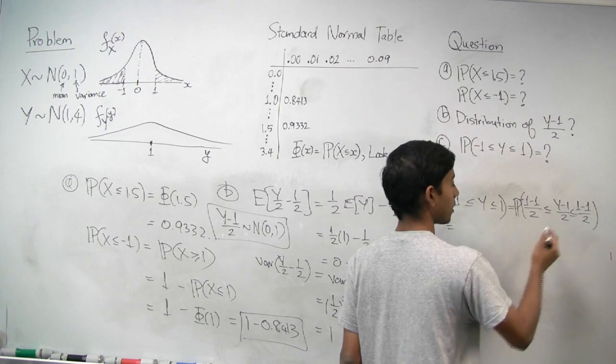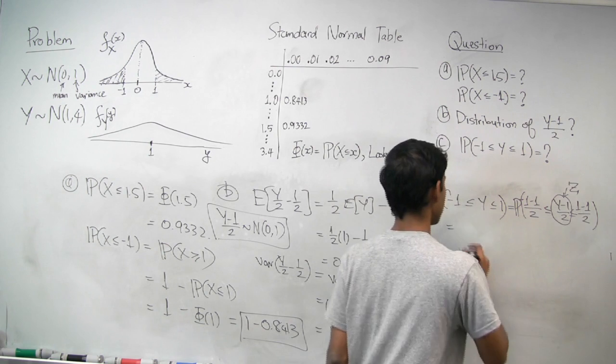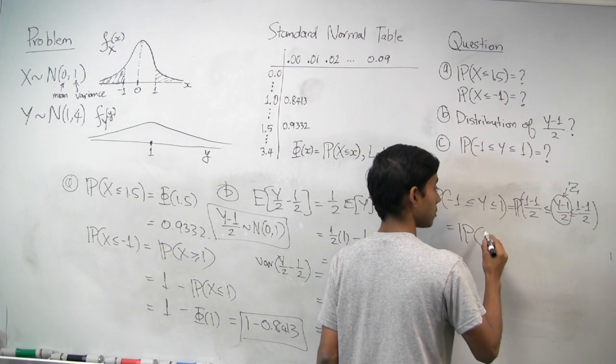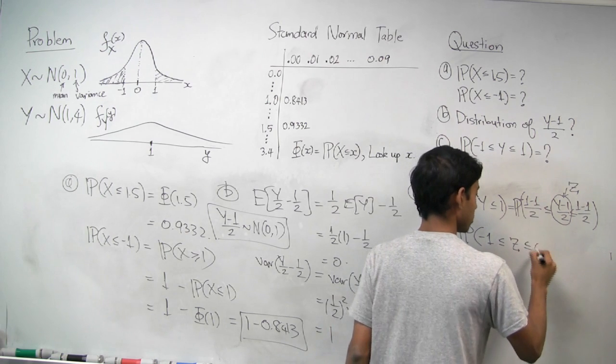And that's equal to, I'm going to call this standard normal Z, so that's easier to write. And that's equal to negative 1, less than or equal to Z, less than or equal to 0.